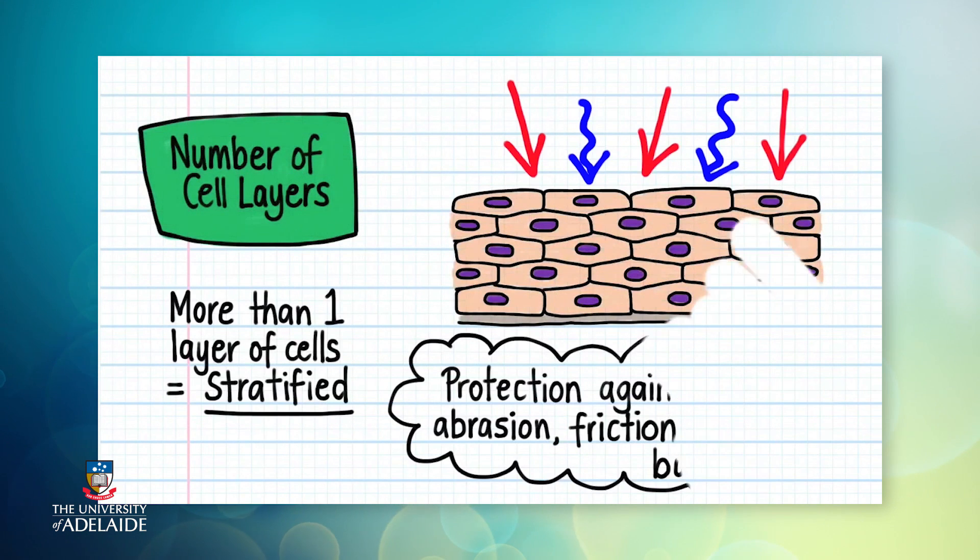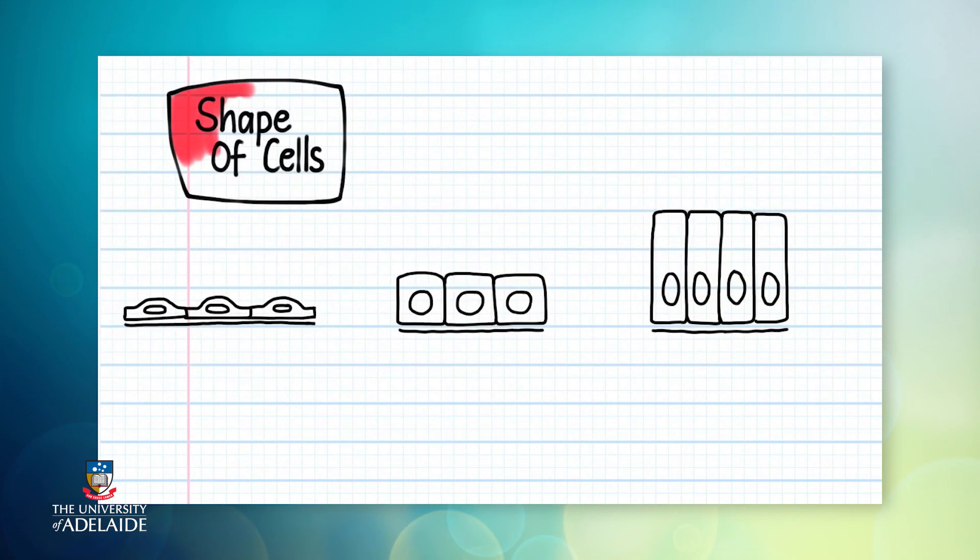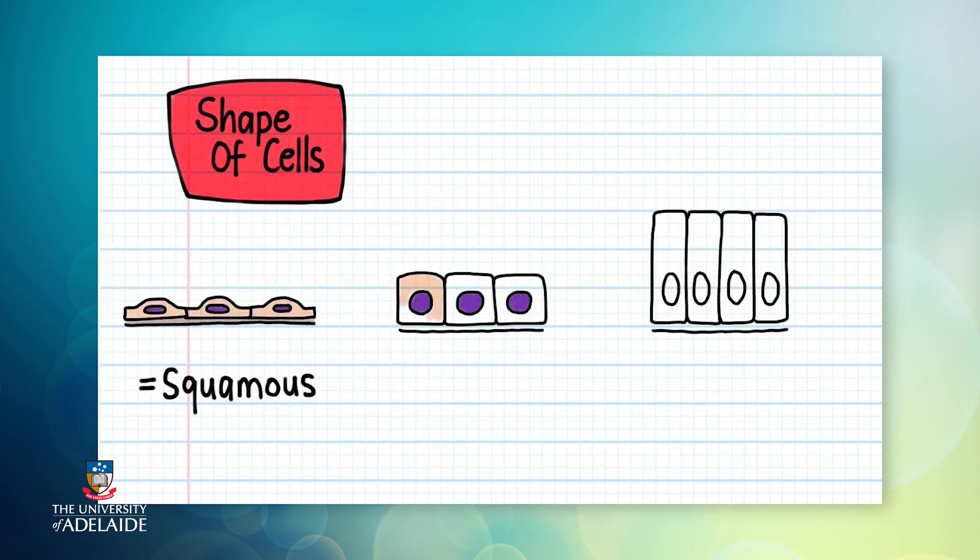Next, let's look at the shape of epithelial cells. If the cells are flat, we call the epithelium squamous. If the cells are cube-like, we call the epithelium cuboidal. And if the cells are column-shaped, the epithelium is, you guessed it, columnar.